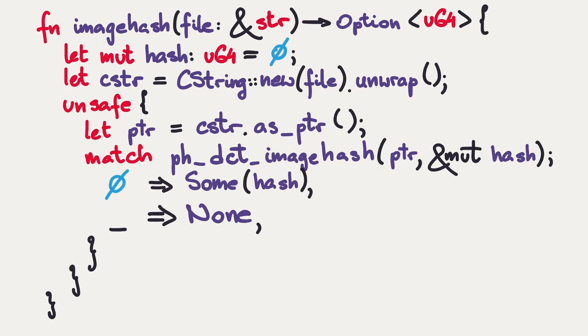Having this declaration in place, we can now write a simple imagehash function, which exposes an API more natural to Rustaceans. Given a reference to a string slice, we will get an optional hash. We will create a C string out of that reference to a string slice, and then in the unsafe block we will pass the underlying memory to the C function. If the function returns zero, we return some hash, otherwise we have nothing to return.